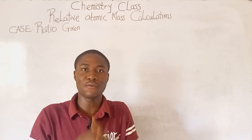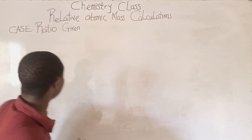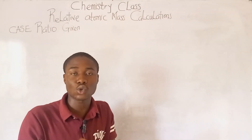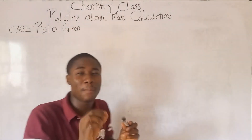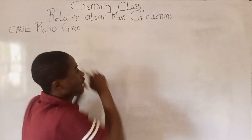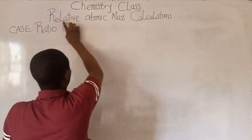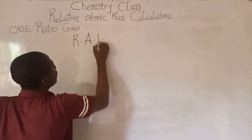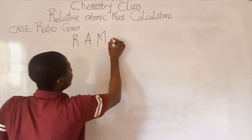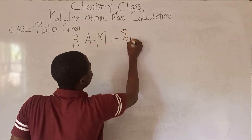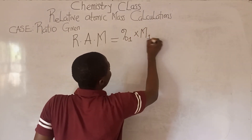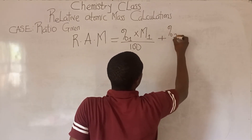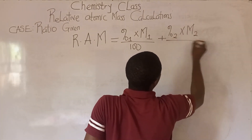First thing first, there is a formula that must be noted when solving questions on relative atomic mass generally. The formula — where RAM stands for relative atomic mass — is: RAM = (percentage 1 × M1) / 100 + (percentage 2 × M2) / 100. I'll explain what each of the symbols actually means.